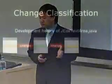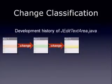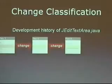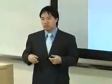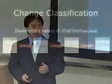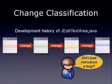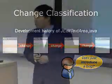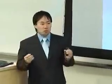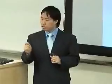Let's talk about change classification first. The idea is this: suppose we have a development history of JEditTextArea.java, and it has revision one. Some people made changes — it goes to revision two, then revision three. As a developer, maybe we need another change. My boss says to make some change, so I make one, and now it turns to revision four. Always, as a developer, my question was: did I just introduce a bug in this change or not? This is the most common question I had. Change classification will answer this: either you introduced a bug or not.